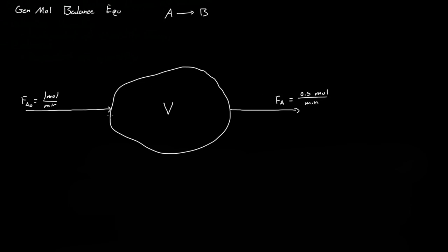That means A is being consumed in the system or it's accumulating. So the change in the moles of A — dNA/dt, where N represents the number of moles of A — is equal to the generation of moles of A (or consumption) plus the moles of A flowing into the system FA0, minus the moles of A leaving the system FA.